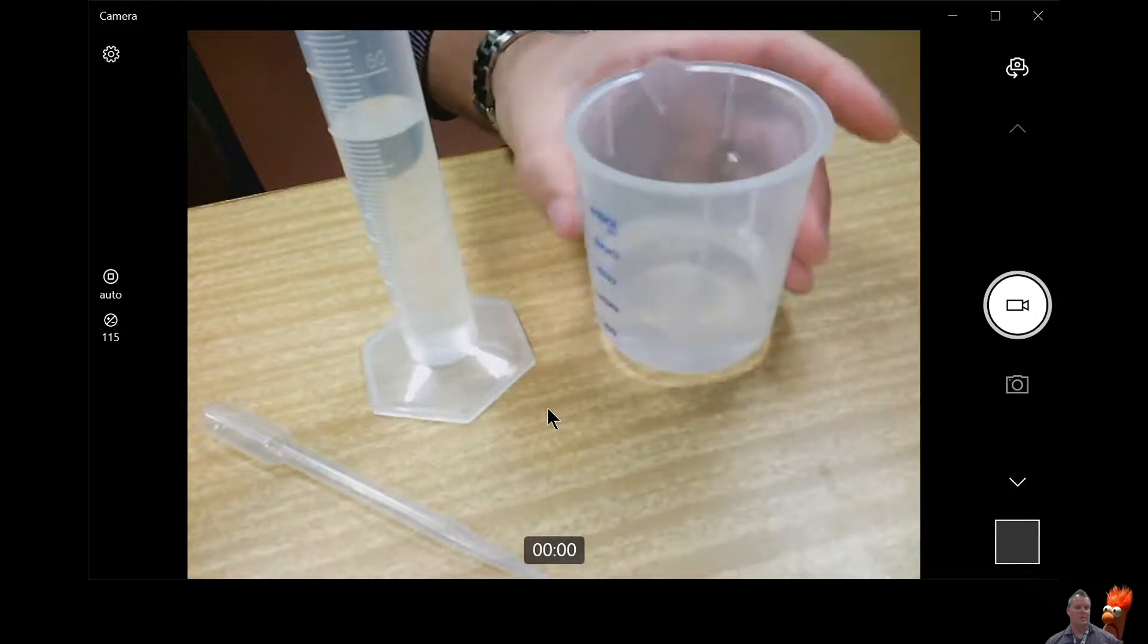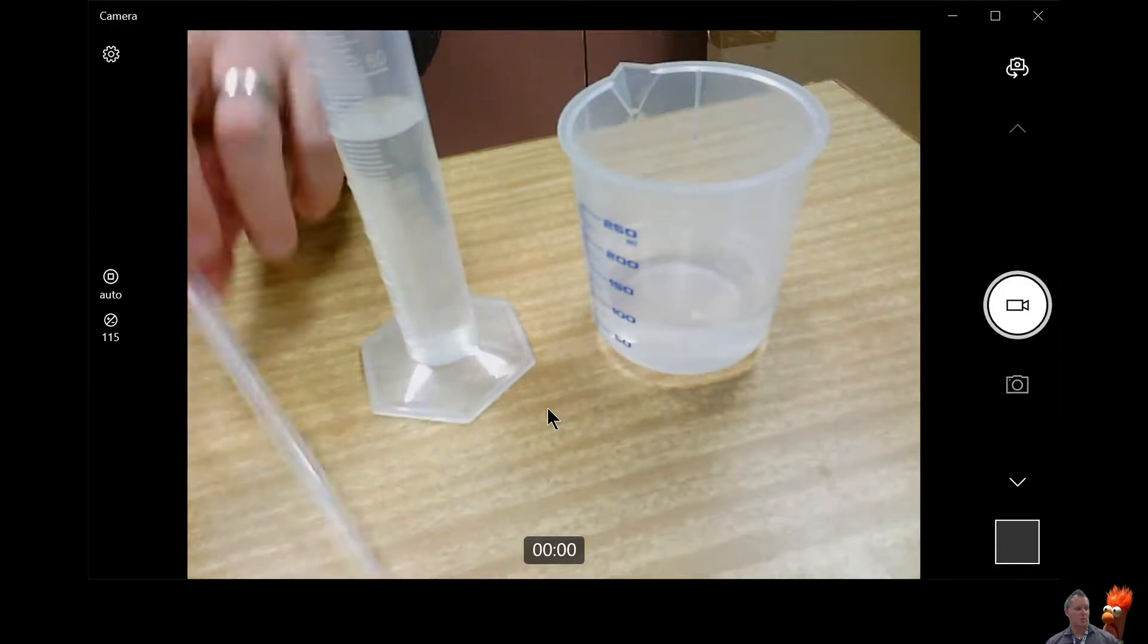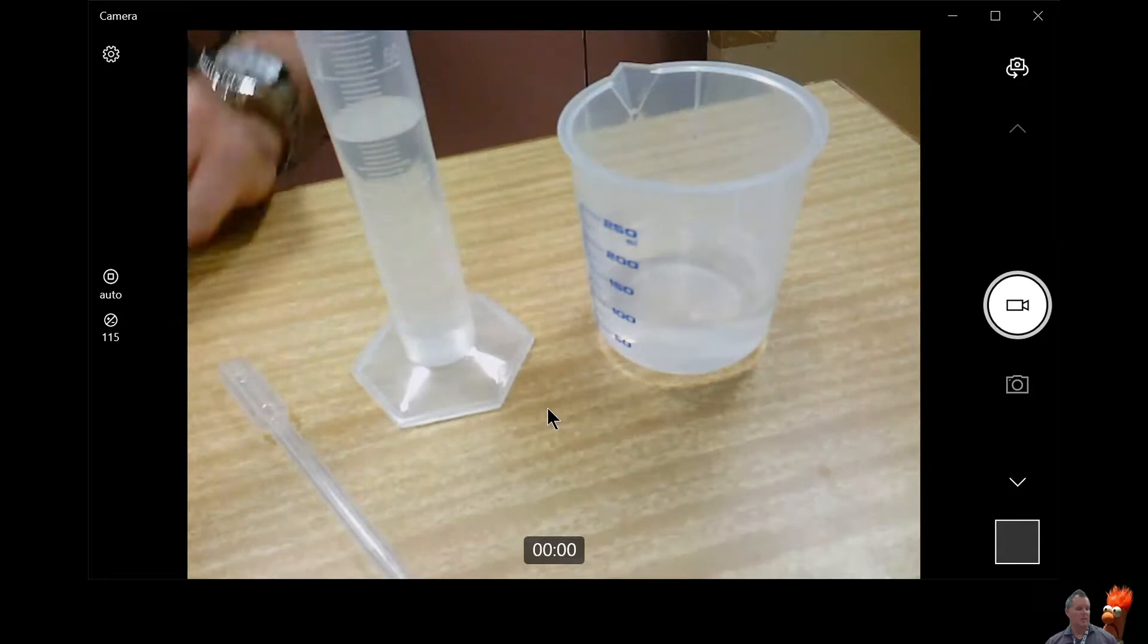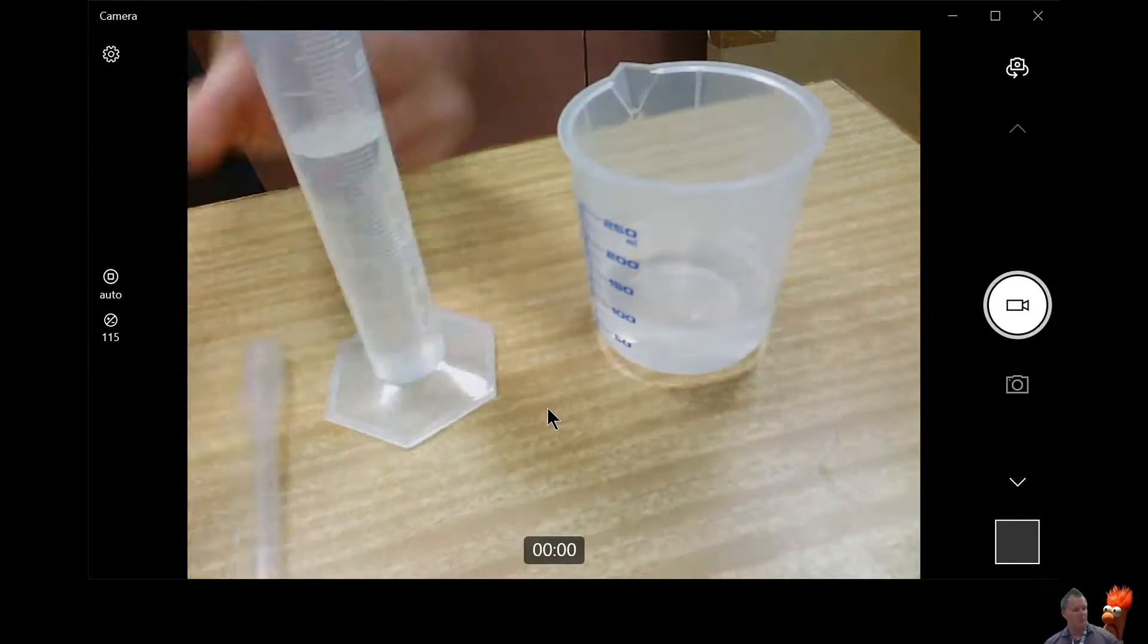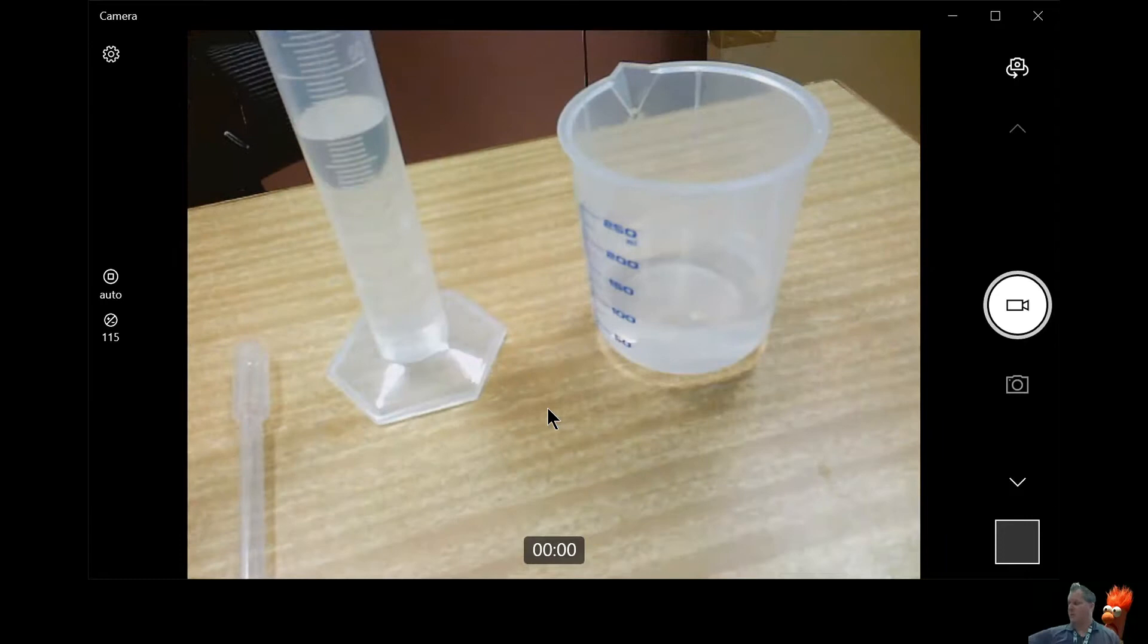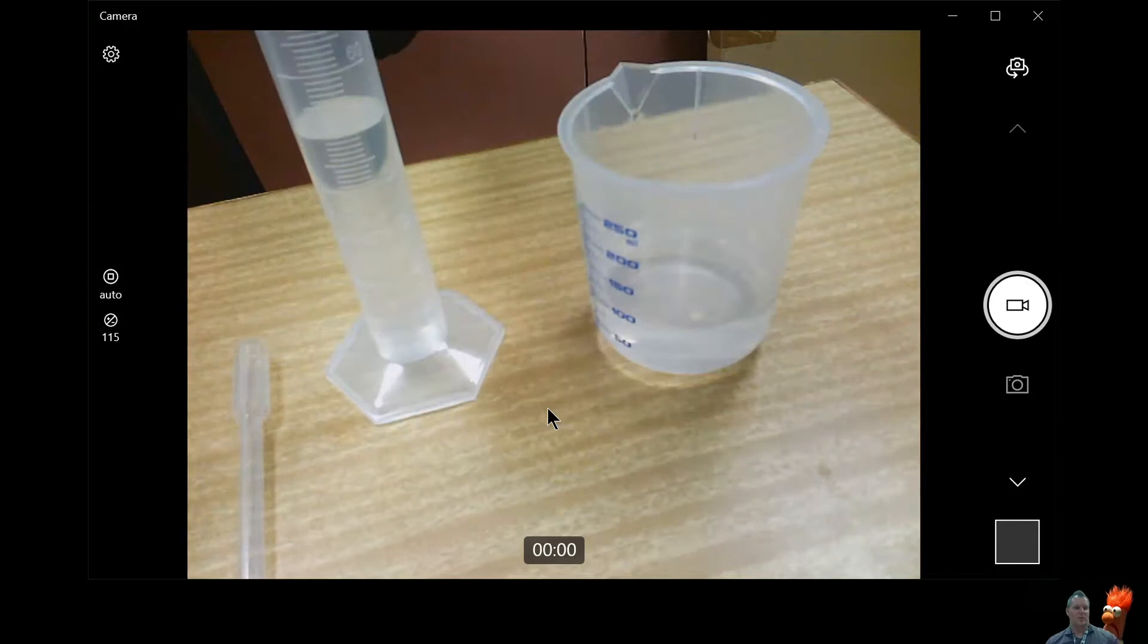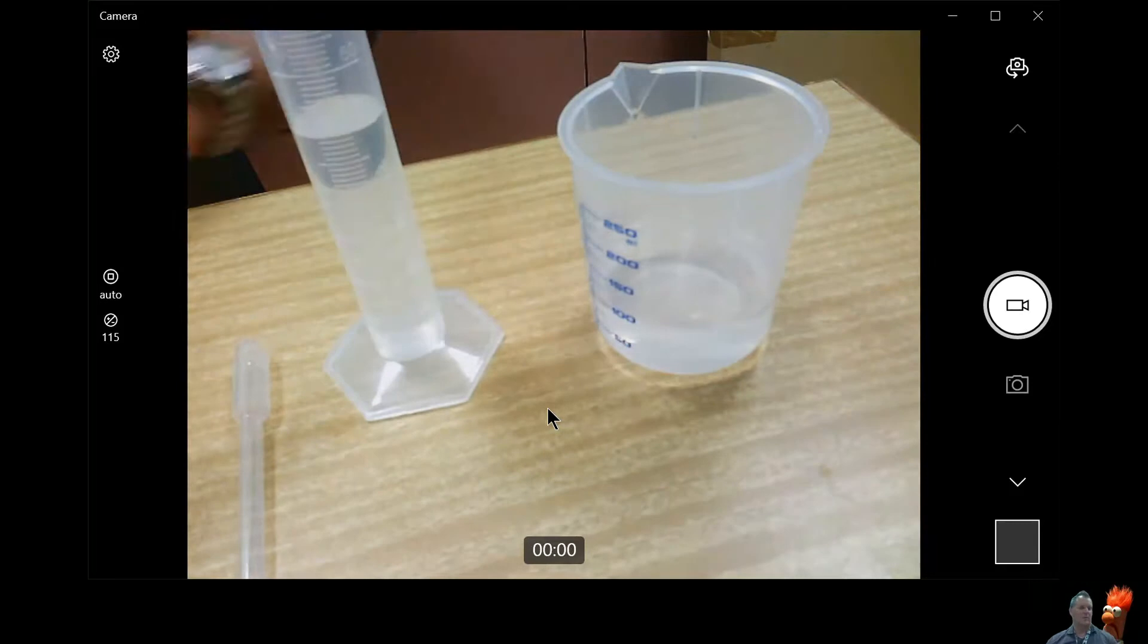Day two starts with I have my graduated cylinder here. I have my beaker with some water. I have also a pipette because I want to be precise. So if I go over my milliliters, if I'm not precise, I need to take a little bit out. I can use my pipette to get out some of the water because these go up by one. So this is going to be a lot more precise.